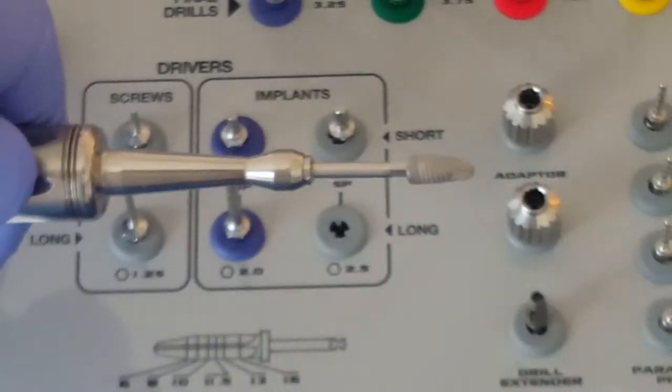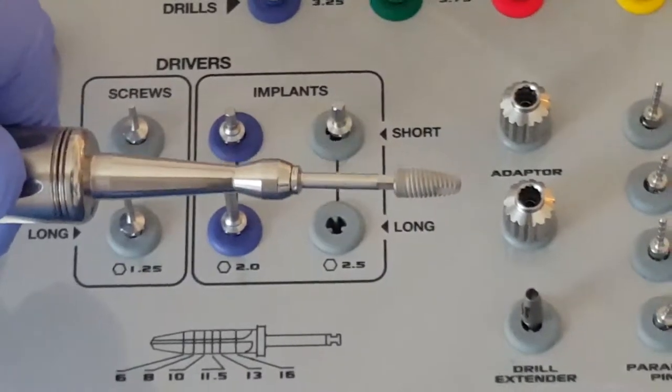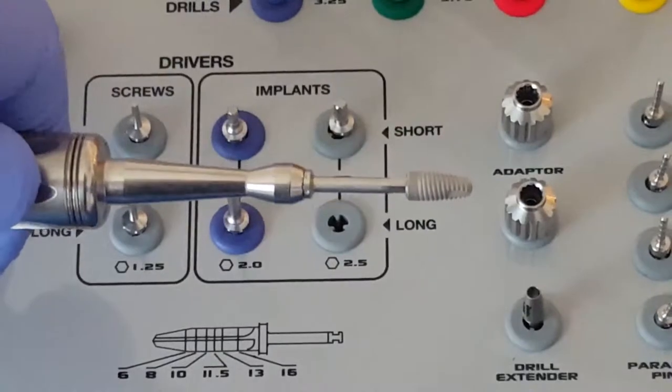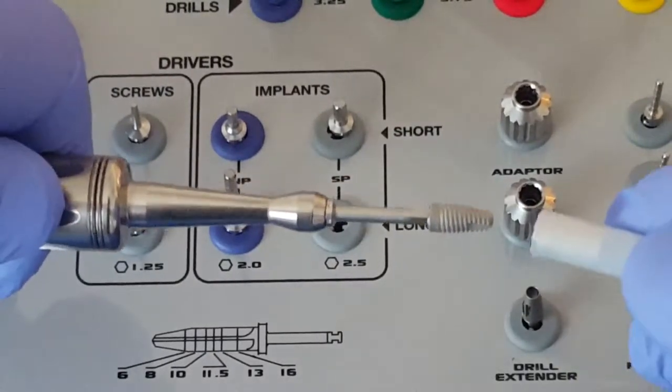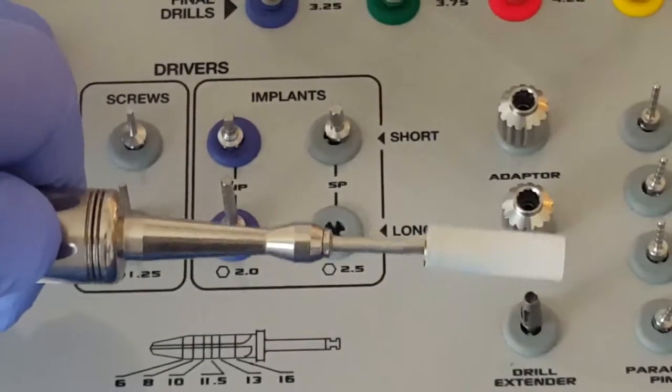If the implant was inserted or partially inserted and then required removal so there can be re-preparation of the osteotomy, then the implant can be re-inserted into its vial and completely encased in titanium without fear of contamination.